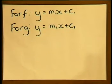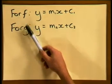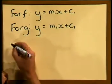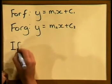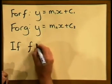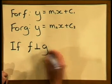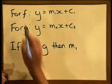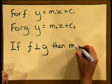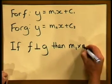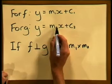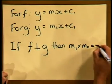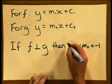So if I have two straight line functions, f and g and if I know that f is perpendicular to g then I know that the gradient of the one function, in this case f m1, if multiplied by the gradient of g, in other words m2, I know that that product will equal negative 1.